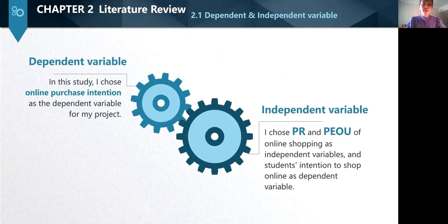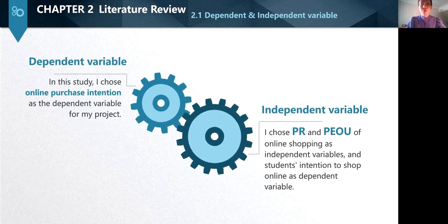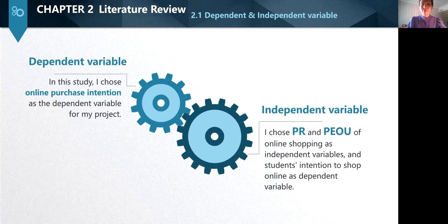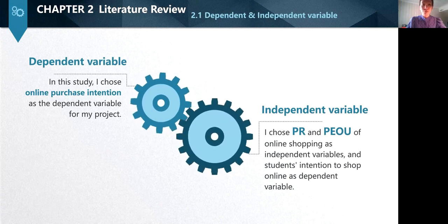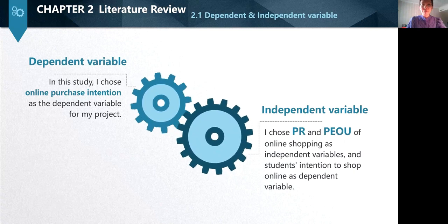According to the definition, dependent variable is a phenomenal change or result of changes influenced by independent variable, whereas independent variable refers to factor conditions that cause changes in the dependent variable.